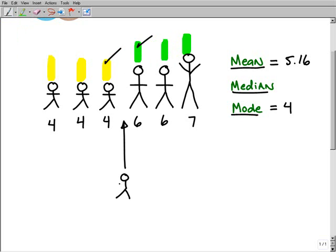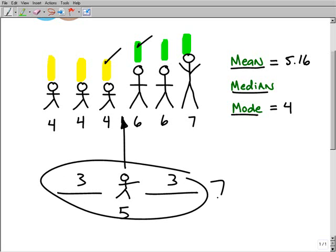Let's suppose I had another person here, and they were five feet tall. Well, in that case, there was three people this way and three people this way. So altogether, there would have been seven people. If we had that situation, five would have been the middle number, the median. So that's the easy case.